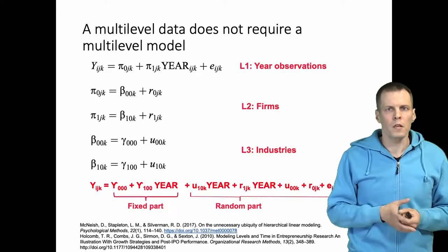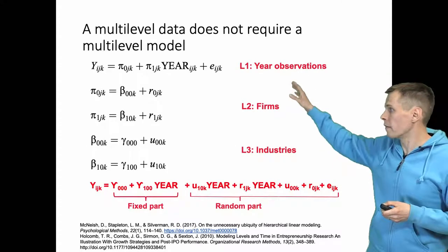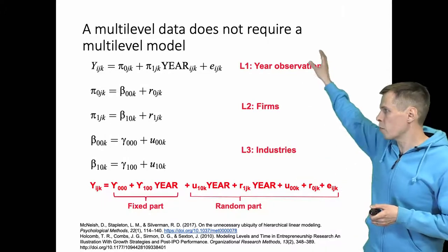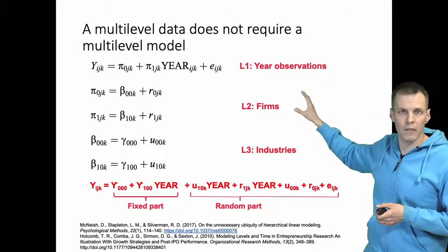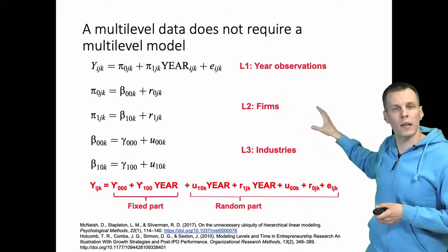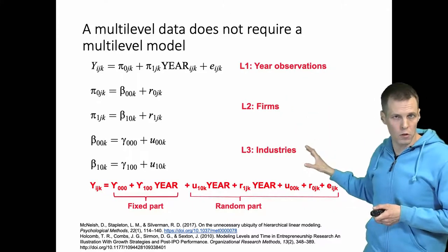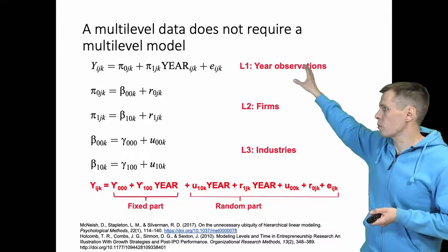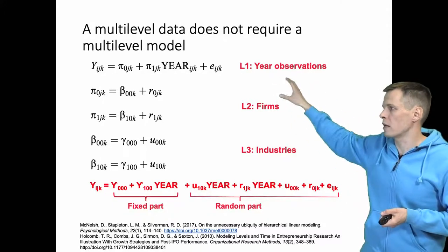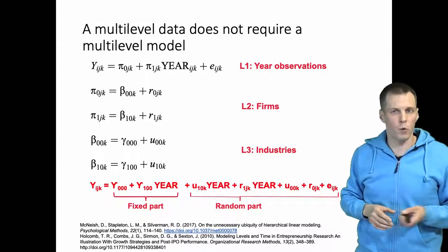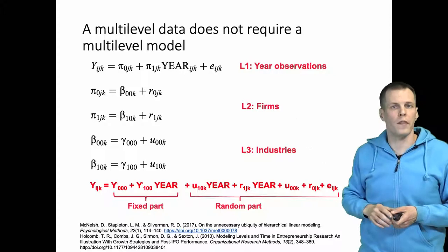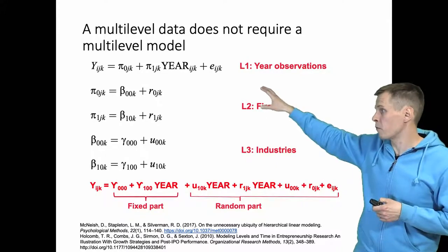The first thing about multilevel models is that they're applied to models where you have multiple levels. So we have level one observations typically nested in level two observations typically nested in level three observations. We could also have crossed random effects so that for example year observations would belong to firms and industries and each firm would have multiple year observations, each industry multiple year observations, and there is no higher relation within firms and industries.